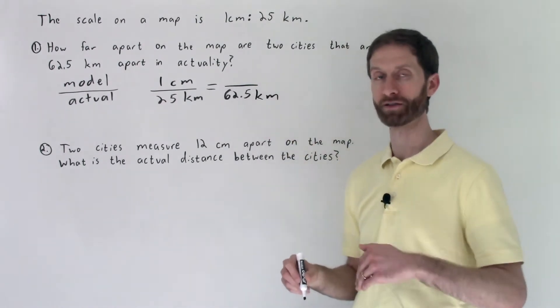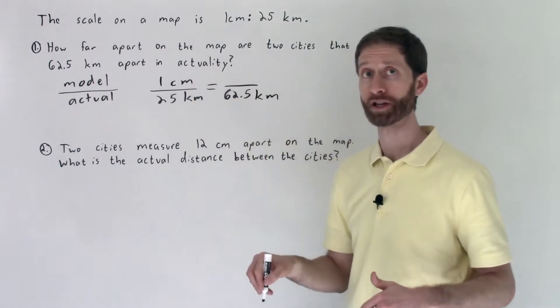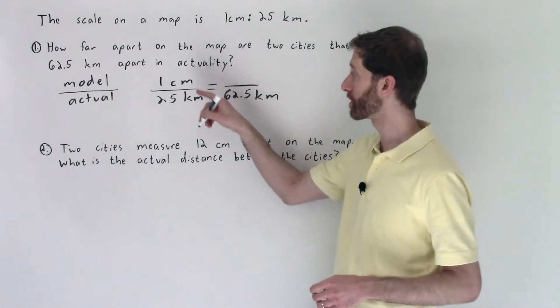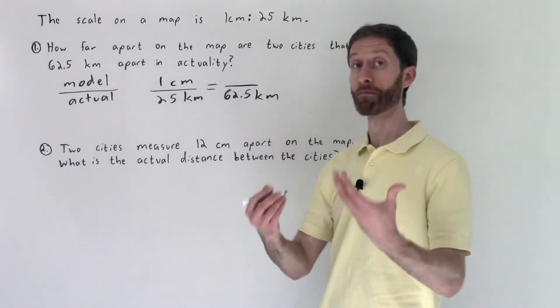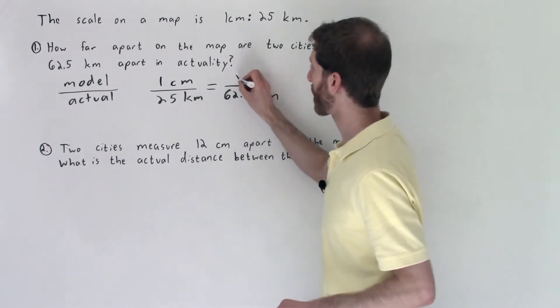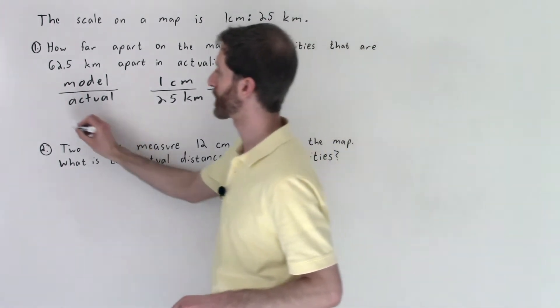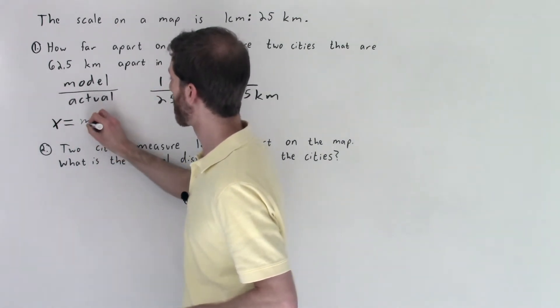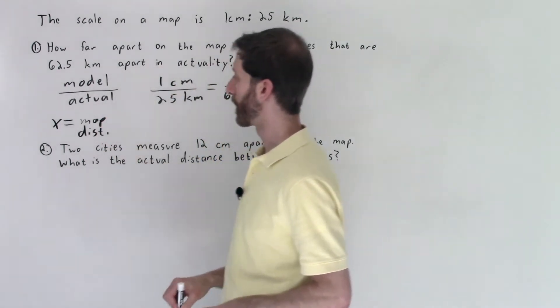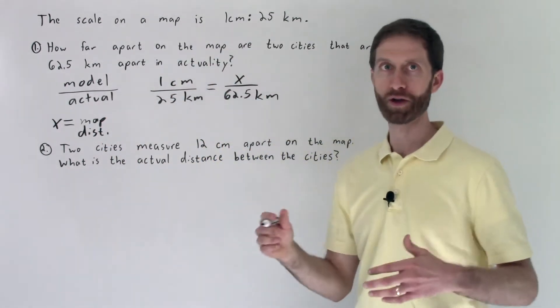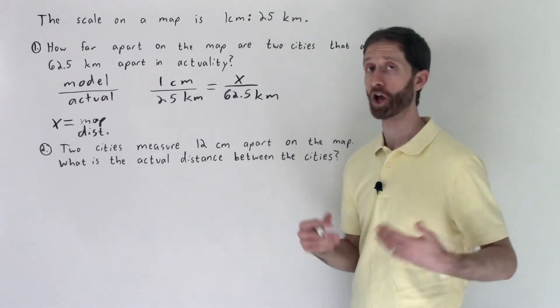The rate on the right hand side will be equal to the rate on the left hand side because we're using the same map with that rate. Now we don't know what the model amount or the map amount is, that's what we're being asked. I'm going to call that x. Now if you want to be fancy you can define your variable and say x equals the map distance, but you might need to write it out in full words if you have one of those very formal teachers, which is great if you do.